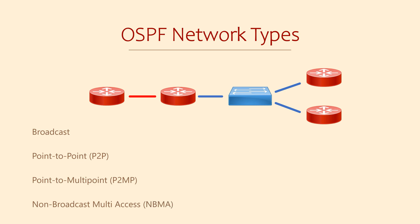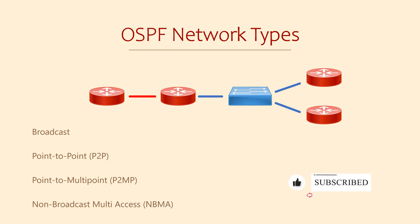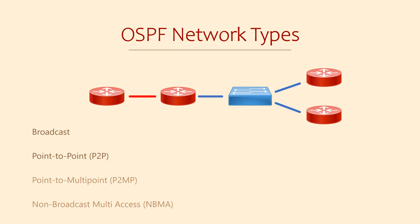There's broadcast, like when the routers are connected to a switch. There's point-to-point, when two routers directly connect to each other. There's also point-to-multipoint and non-broadcast multi-access, or NBMA. For a CCNA exam level, we're only going to be worried about the first two — broadcast and point-to-point — so you can ignore the other two for this series.